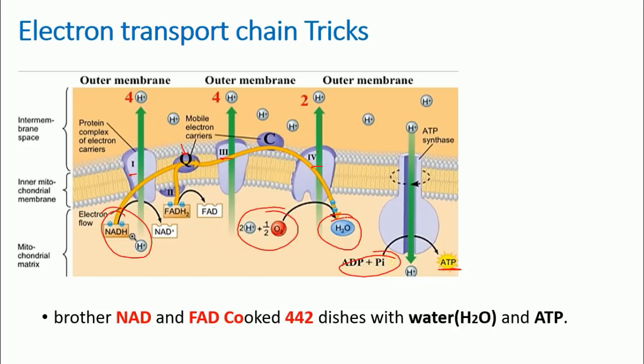It says: brother NAD and FAD cooked 442 dishes with water and energy, which is in this case ATP. So imagine brother NAD and FAD cooked 442 dishes with water and ATP. So it's a pet name NAD and FAD. You start with NAD or NADH, FAD or FADH2. Both of them are electron donors in the first place, which you can see here.